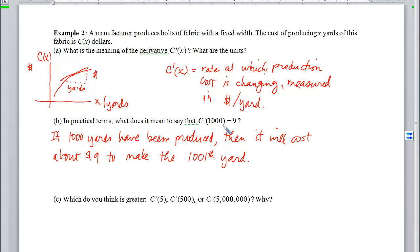then it will cost about $9 to make the 1,001th yard. What this does is it has a predictive effect. It tells us if I've already made this much, then if I go over 1 yard, I'm going to go up the slope of that tangent line, which is our c prime of x. So if I've made 1,000, then going over 1 yard is going to take my cost up $9.